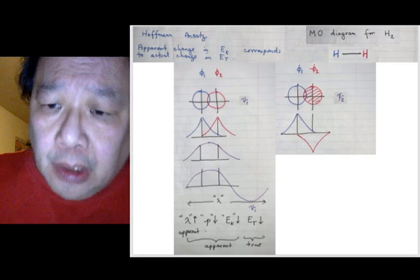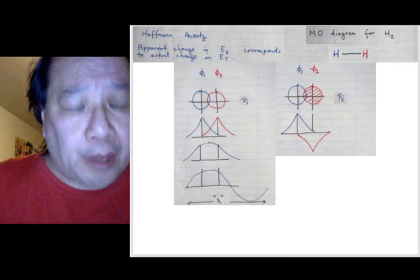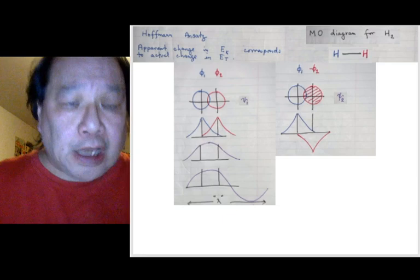That means the apparent momentum has, put it in chat. If the apparent lambda has increased, what has happened to the apparent momentum? Well, they're inversely proportional. So, it's decreased. If the apparent momentum has decreased, what has happened to the kinetic energy? It has decreased.